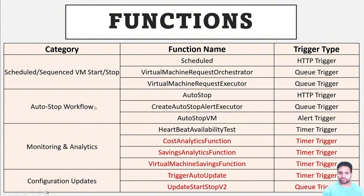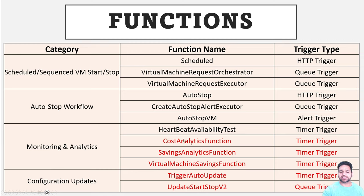For the autostop workflow, there is a function named autostop based on CPU utilization, then autostop alert executor and autostop VM alert trigger, which sends an alert that a virtual machine is stopped. There are also different functions for monitoring, analysis, and heartbeat availability tests — every 15 minutes this function checks whether virtual machines are shut down for the specific period defined in the logic app. Three functions define cost and savings for these virtual machines, but these are used by Microsoft to collect data on solution benefits for customers — marked as deprecated and of no direct use. Finally, two configuration update functions deploy new versions of the solution, though Microsoft has stopped updating it directly.